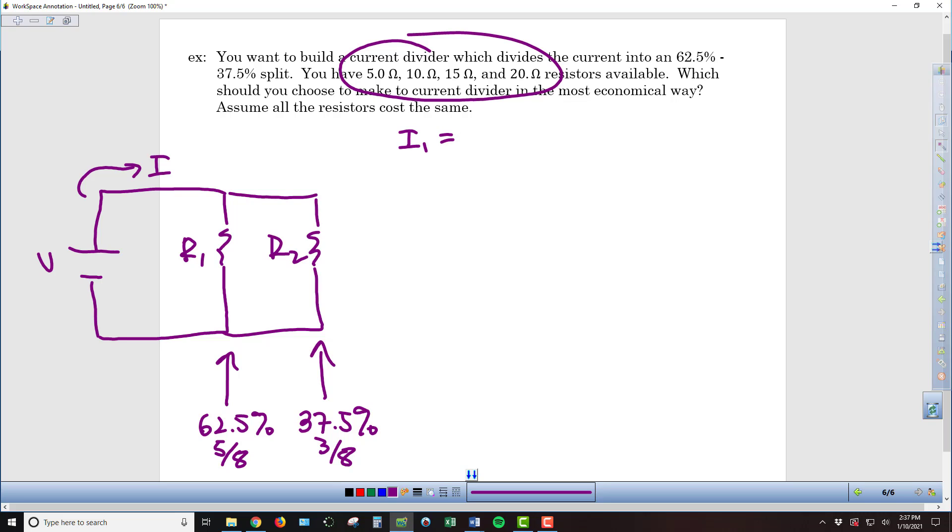I1, the current flowing through resistor 1, is going to equal the current from the battery times R2 over R1 plus R2. And then I2, the current flowing through the second part of the circuit, is equal to I times R1 over R1 plus R2. So these are the two equations that we have to work with from our current divider example derivation before.